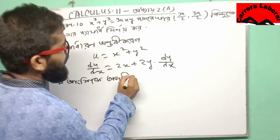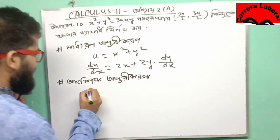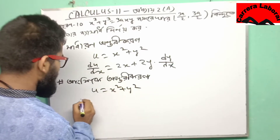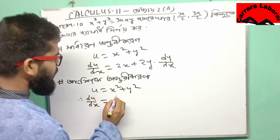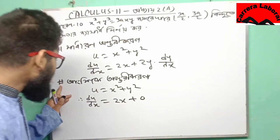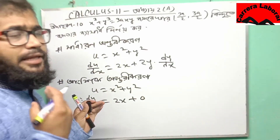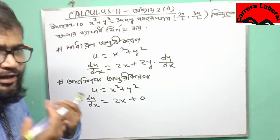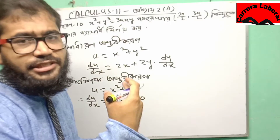The same thing: u minus x square plus y square. And du by dx equals minus 2x plus 0. This is the same thing, and this is 0.